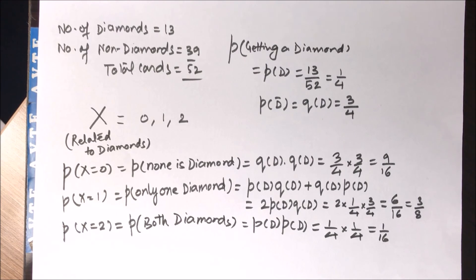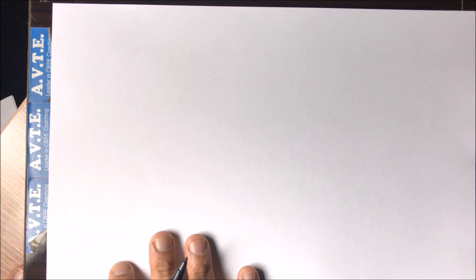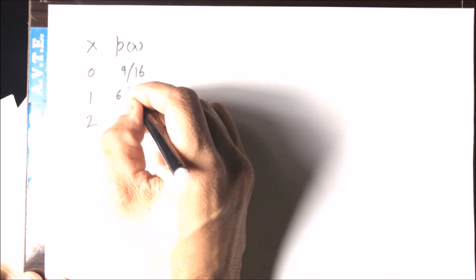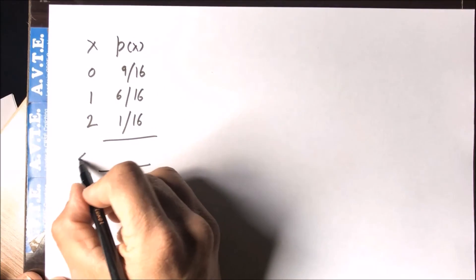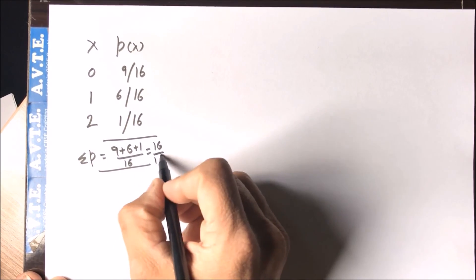This completes the initial part of the question. Now we make the probability distribution table and use it to find mean and variance. The probabilities are: P(X=0) = 9/16, P(X=1) = 6/16, P(X=2) = 1/16. The sum total is 9 + 6 + 1 = 16 over 16 = 1. ✓